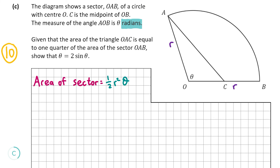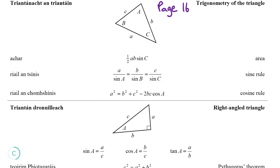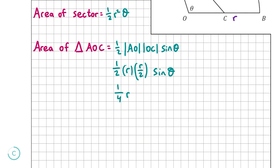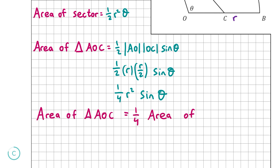Now we write down the area of triangle AOC using the formula from page 16 of the formula and tables book: half AB sine C — that is, half the product of two sides times the sine of the included angle. In our case, that's one half times OA times OC times sine theta. OA equals r and OC equals r over 2 since C is the midpoint of OB. Multiplying this out gives one quarter r squared sine theta.